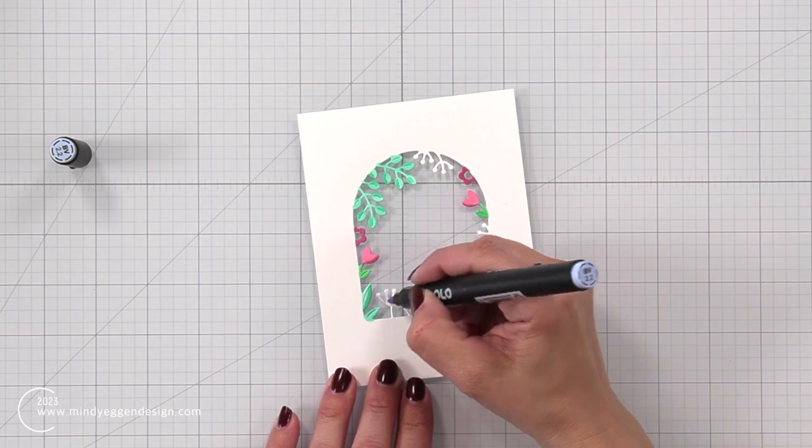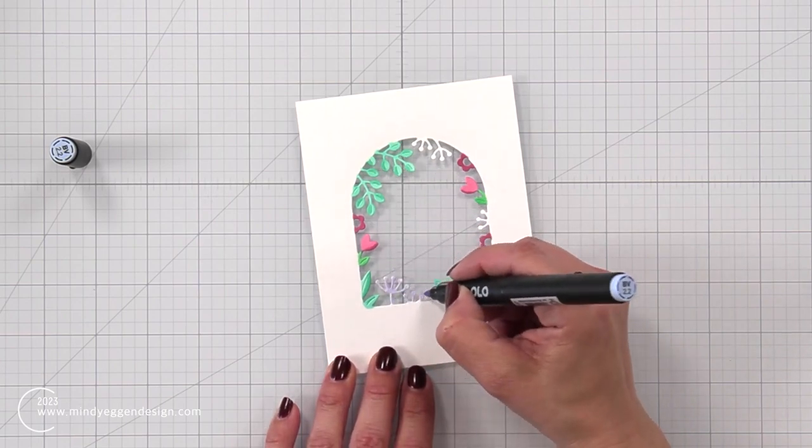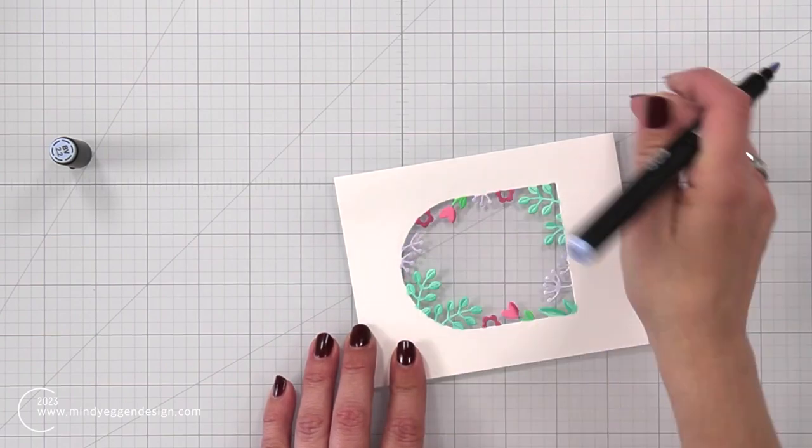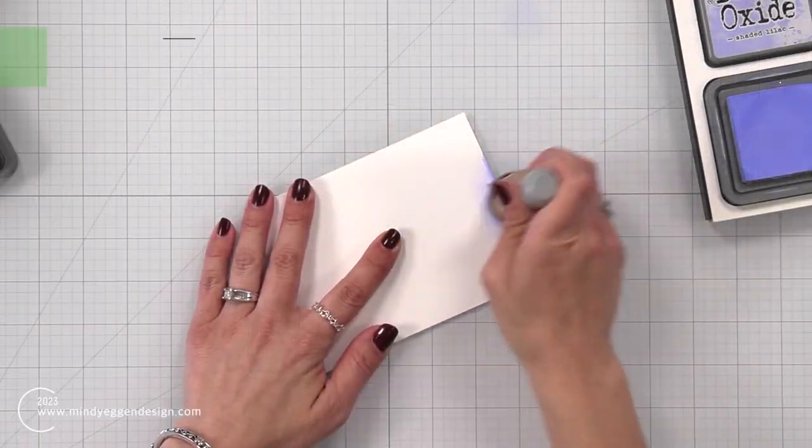And then for the other pieces that are in there, I have this BV 2.2, which is a really beautiful kind of light bluish purple. It was just a really nice soft touch to that.